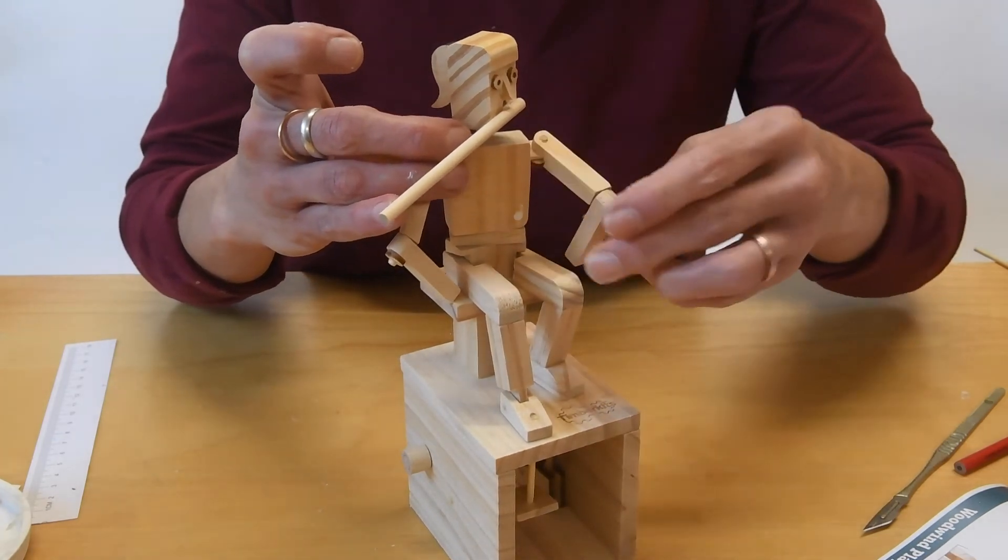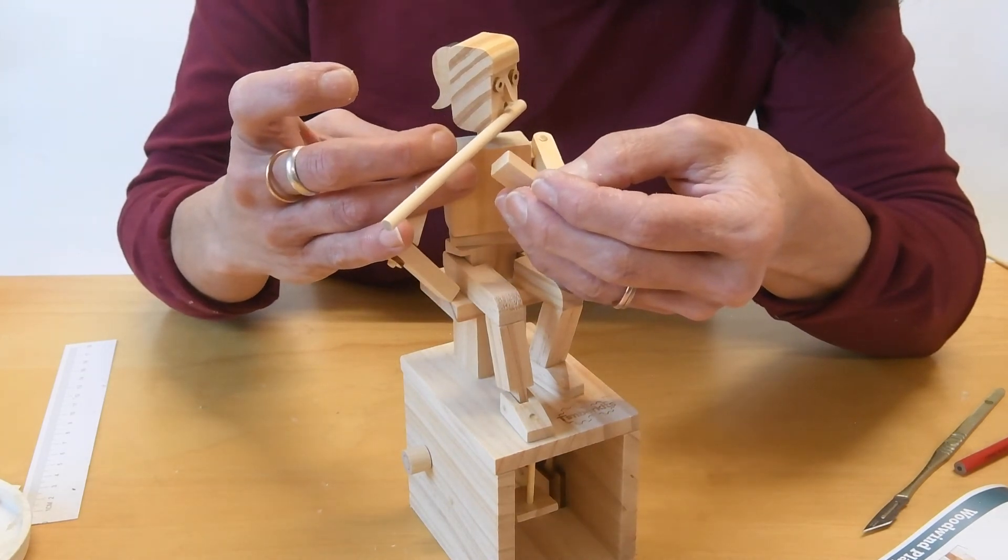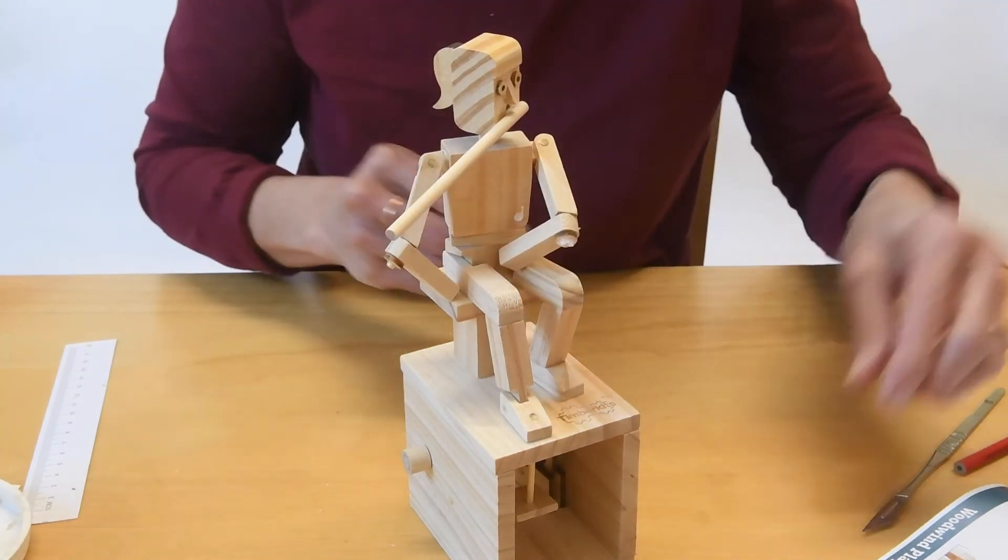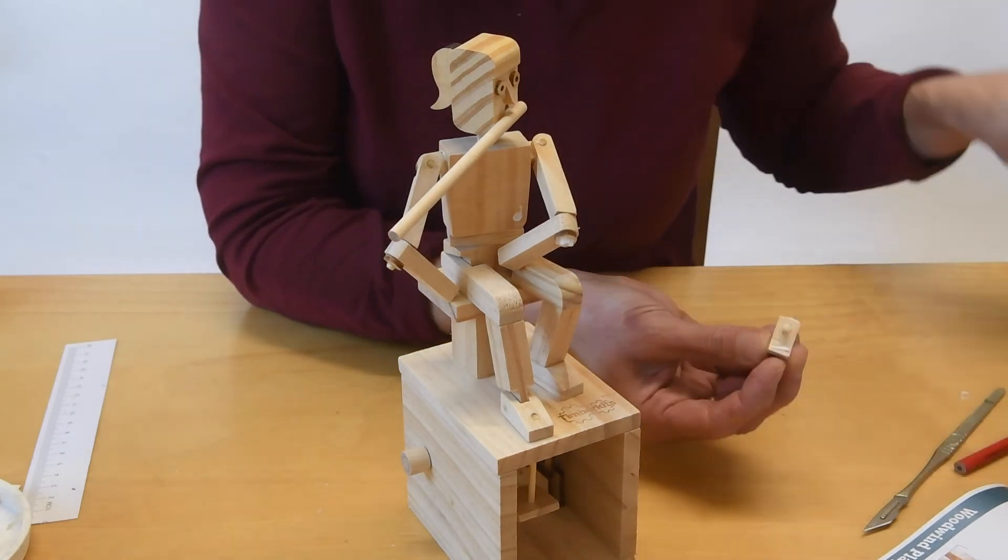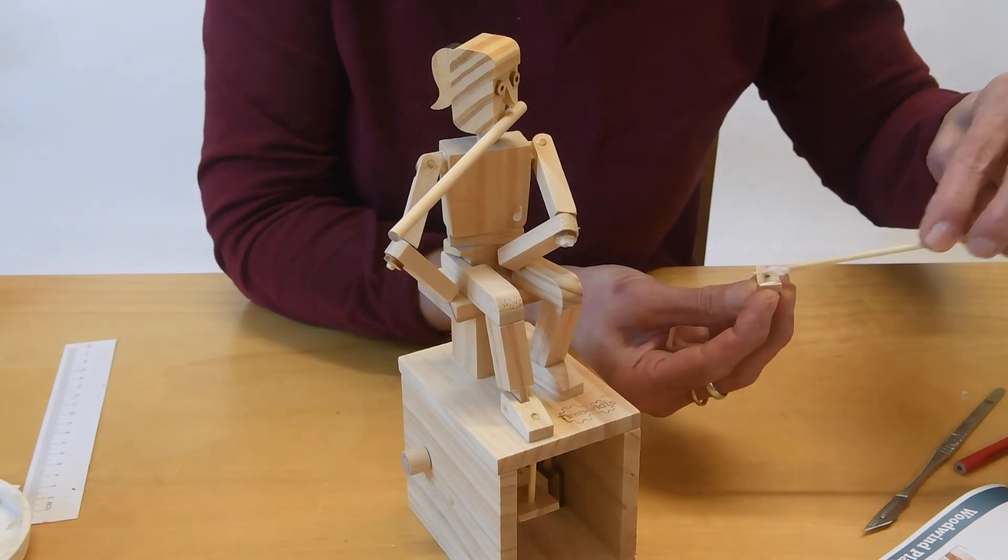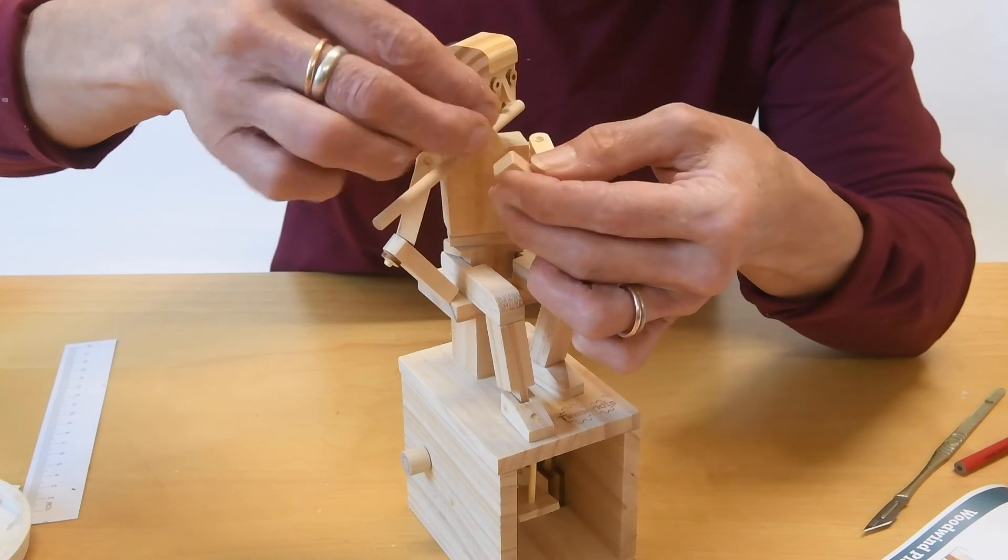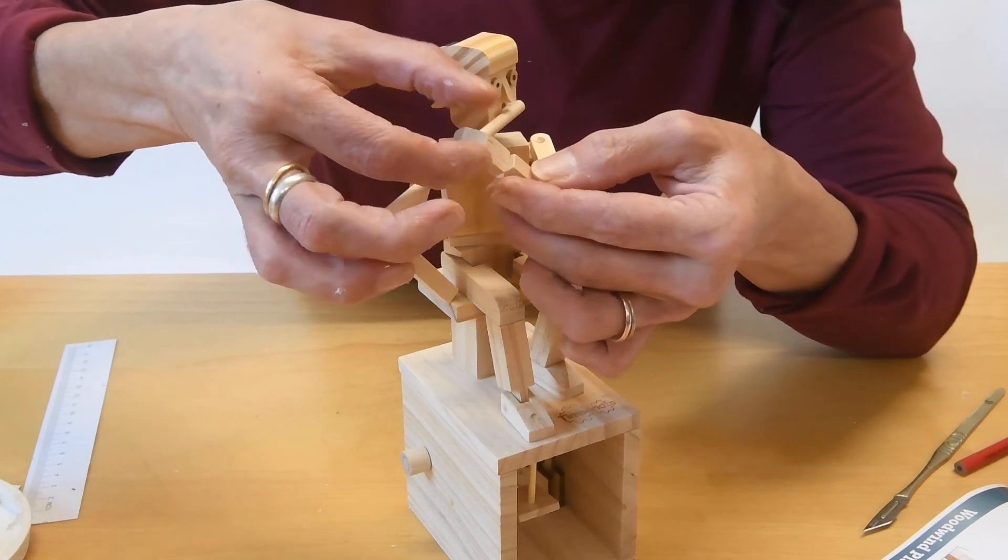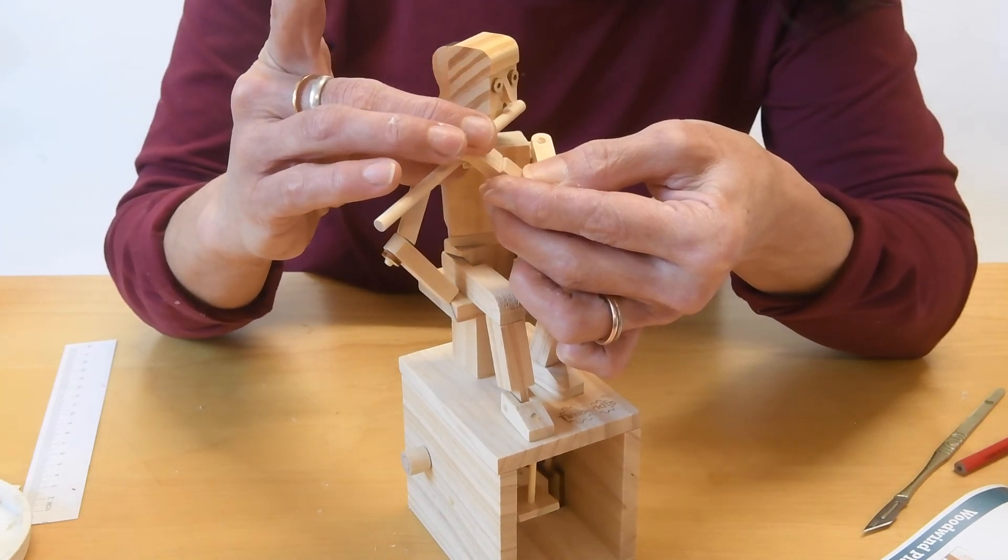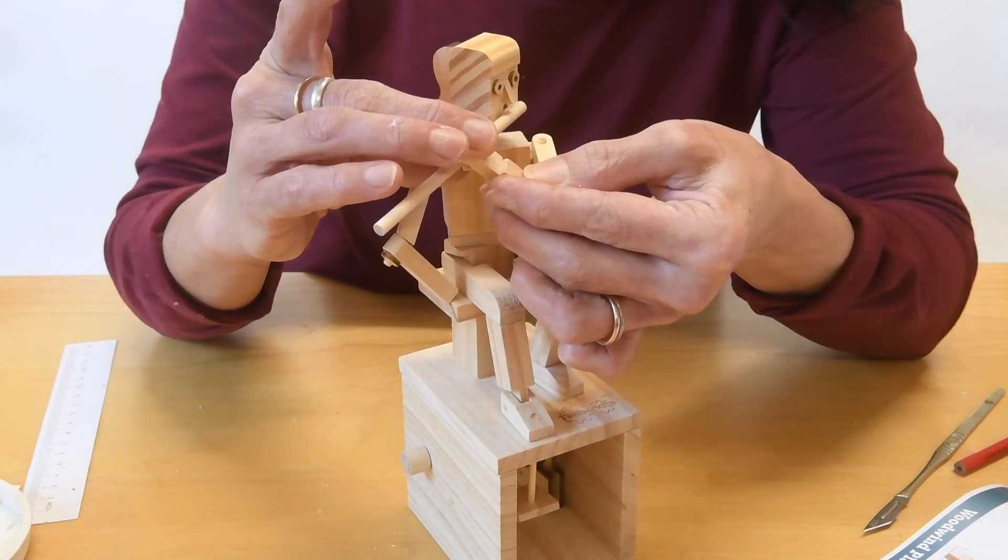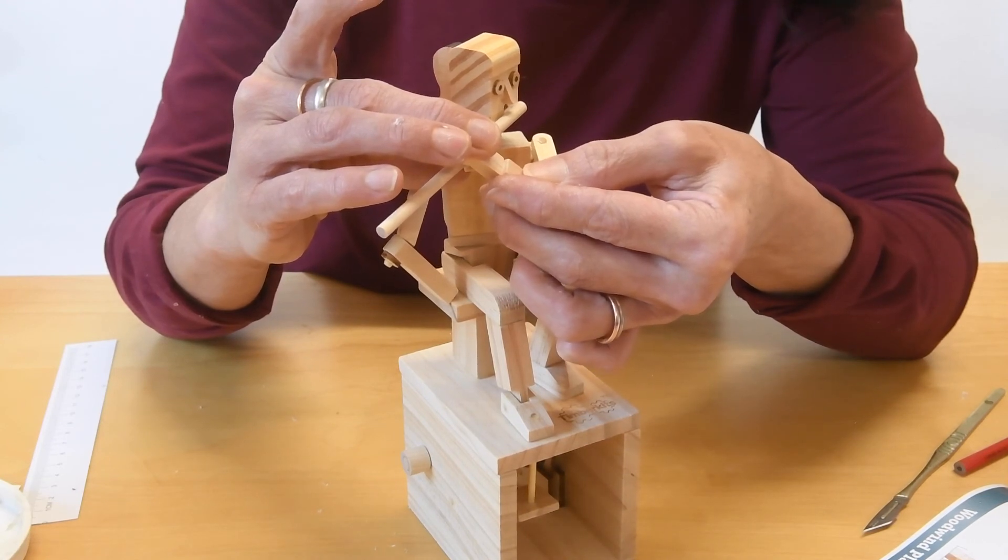And glue the shoulder in. Have a think about where that arm is going to go. We'll have that one at the higher position. Get the hand glued up with a bit of glue in the palm and a bit on the thumb. And think about what angle that hand is going to need to be fixed at. So about there. I'm just going to hold this for a minute until the glue is just caught.